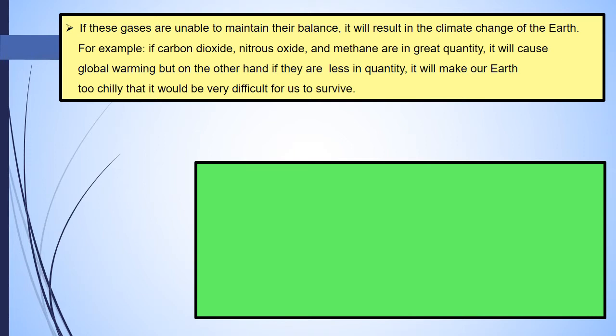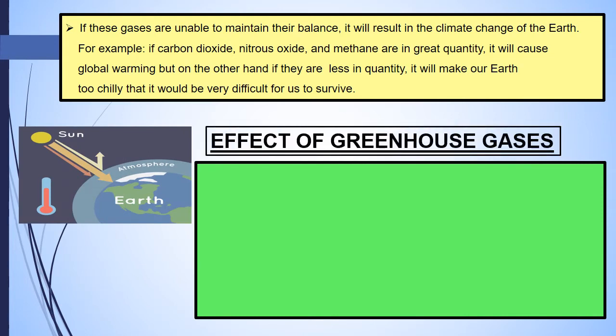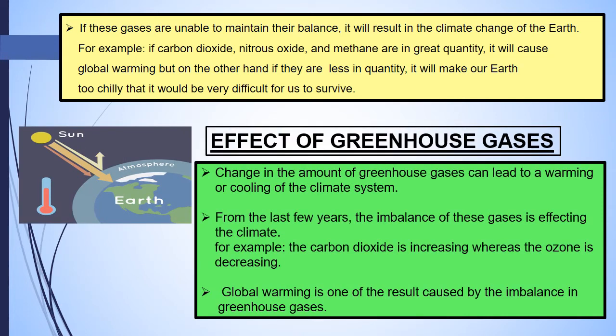If these gases are unable to maintain their balance, it will result in climate change. For example, if carbon dioxide, nitrous oxide, and methane are in great quantity, it will cause global warming. On the other hand, if they are in less quantity, it will make our earth so chilly that it would be very difficult for us to survive.